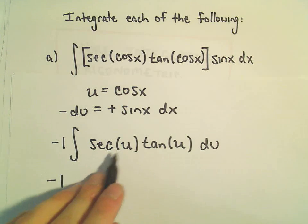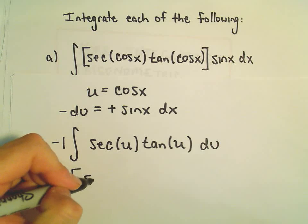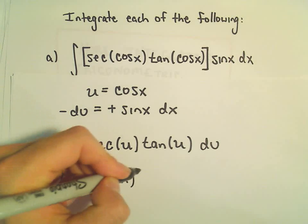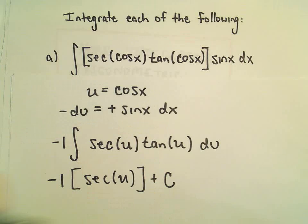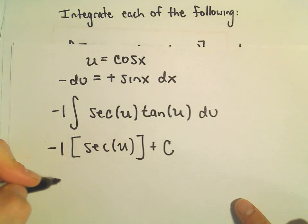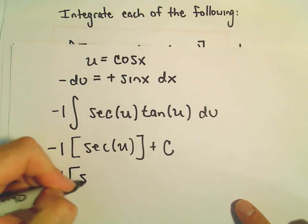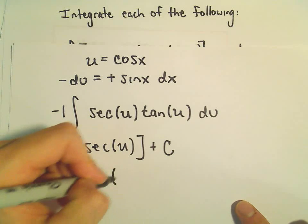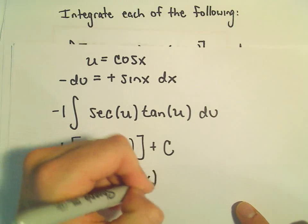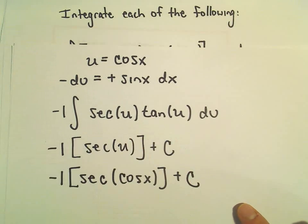And well, the antiderivative of secant times tangent is just secant of u plus c. And now, again, we can just plug our substitution back in. So we would get negative secant of cosine x, all of that, plus c.